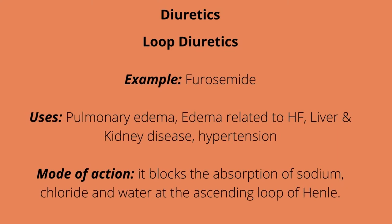With diuretics, we have three different types: loop diuretics, potassium-sparing, and thiazide diuretics. Our loop diuretics — examples include furosemide, Lasix. It's used for either pulmonary edema, edema related to heart failure, liver, or even kidney disease, as well as hypertension. Its mode of action: it blocks the absorption of sodium, chloride, and water at the ascending loop of Henle, which causes rapid diuresis.